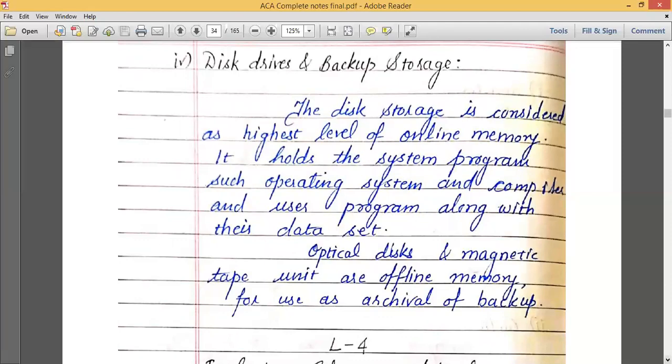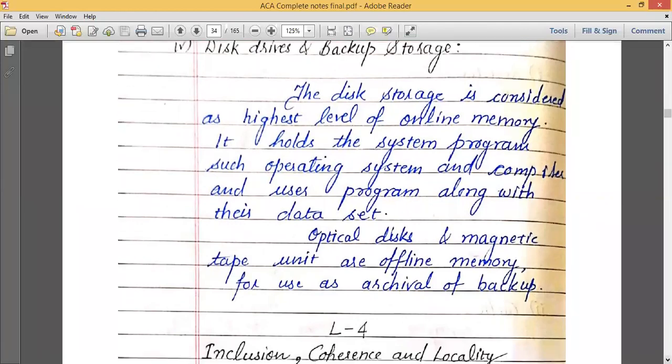Now talking about disk drive and backup storage. Disk storage is the highest level of online memory. There are two types of memory: online memory and offline memory. Backup storage and disk storage is always attached to the computer. Whenever you turn on the computer, that disk drive is accessible. It is always online. Whenever computer is on, it can be accessed anytime. But if we talk about backup storage, like our optical disk, CD drive, etc., it comes to offline memory. Why? Because we use it for archival and backup. When the computer system starts, it is not accessible. We have to plug in and insert it. Then we are able to access those backup storage. So these are the highest level of the memory, which have high capacity, high access time, and low cost per byte. These are the levels of memory hierarchy.